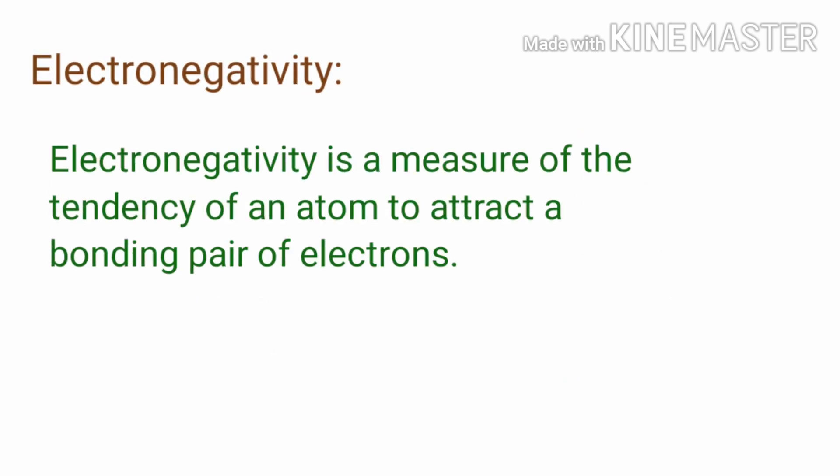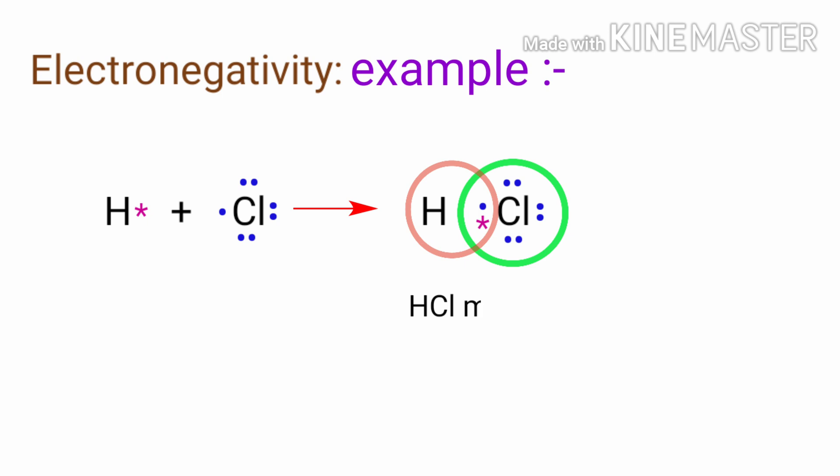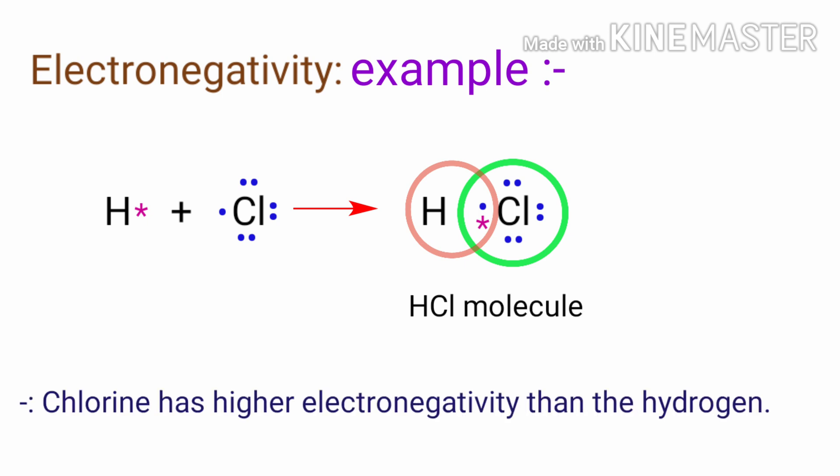Electronegativity is a measure of the tendency of an atom to attract a bonding pair of electrons. For example, the chlorine atom has a higher electronegativity than the hydrogen atom, so the bonding electrons will be closer to the chlorine than the hydrogen in the HCl molecule.